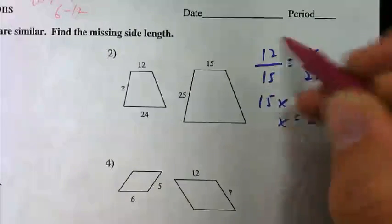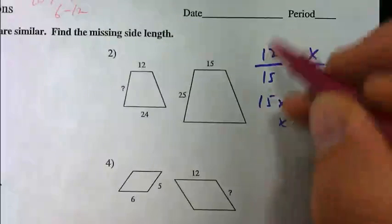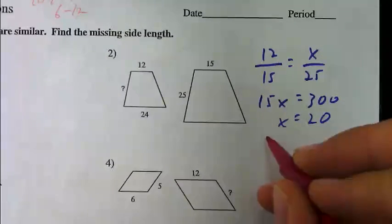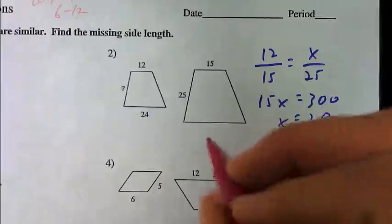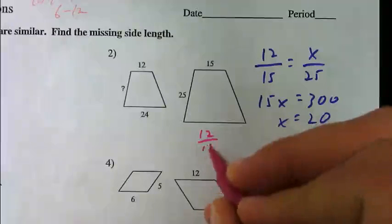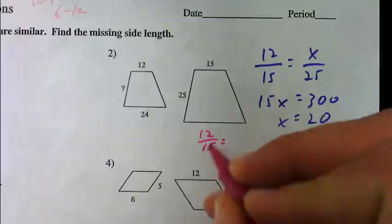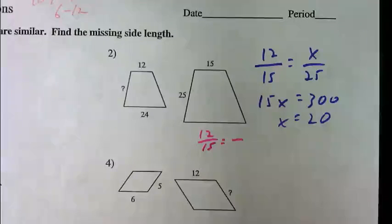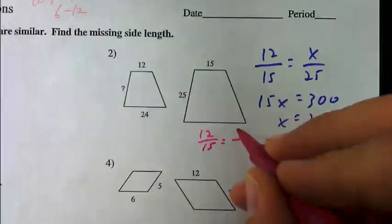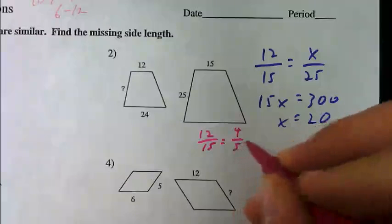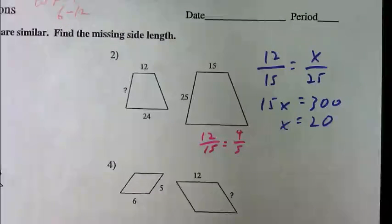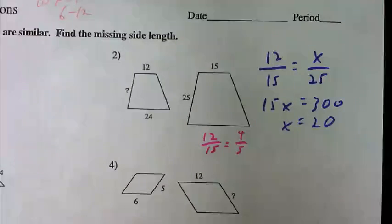When you have this first fraction that we did here, we could simplify it. So this would be 12 over 15 reduces down to what? 4 over 5. Because they both reduced by 3, right?